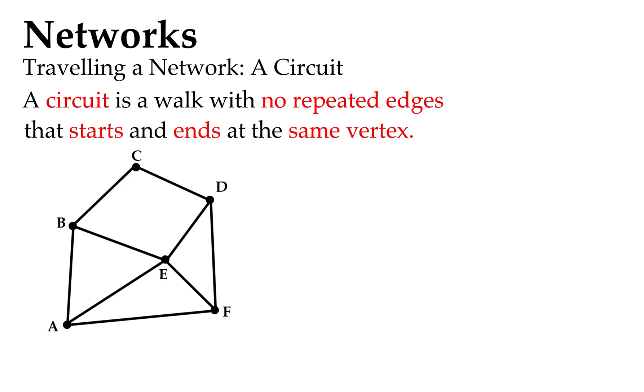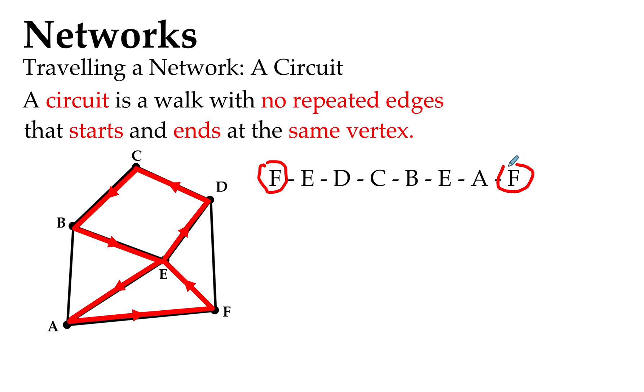Let's have a look at our example. If we go from F to E to D to C back to B down to E down to A and finishing off at F, which was our starting point as well. Notice we have F as our starting point and F as our finishing point. That's one of the conditions: starts and ends at the same vertex, in this case the vertex F.